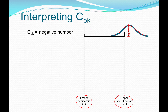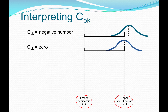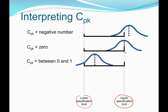Similarly, if the process center falls outside of the lower spec limit, we would also have a C sub p k that is negative. A C sub p k of zero means that the average or center of the process falls exactly on one of the spec limits, either lower or upper. A C sub p k between zero and one means that the process center is within the spec limits but off center — not on the target.